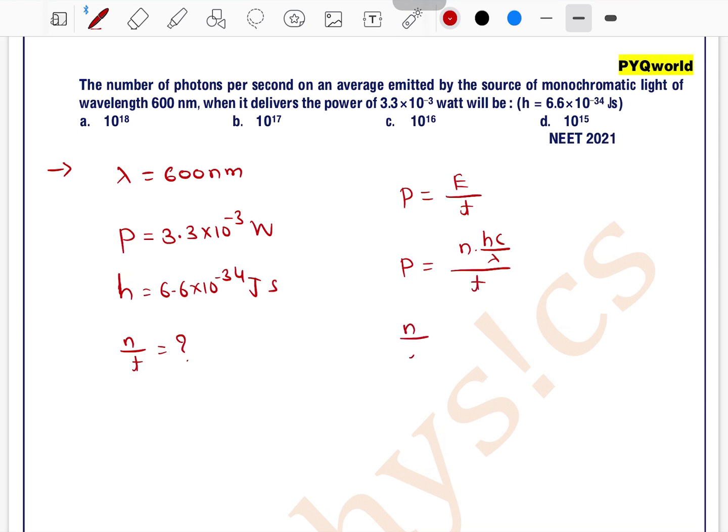So, we can write n by t is equal to power divided by hc by lambda.